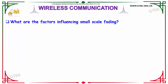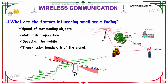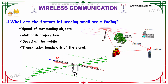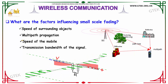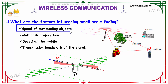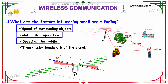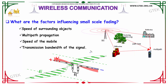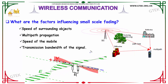What are the factors influencing small-scale fading? The factors that influence small-scale fading are: speed of surrounding objects, multipath propagation, speed of the mobile, and the transmission bandwidth of the signal. So these are considered to be the factors influencing small-scale fading.